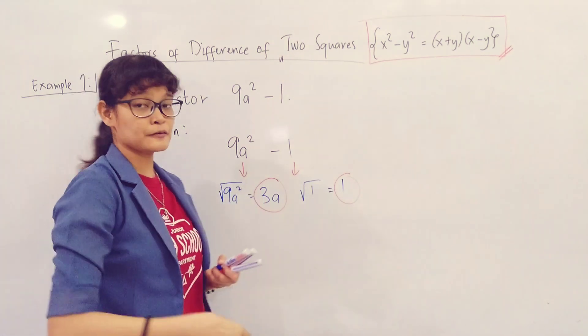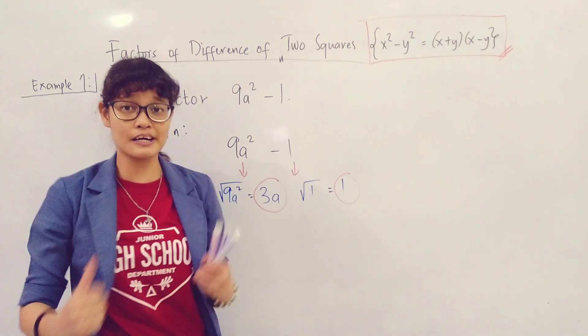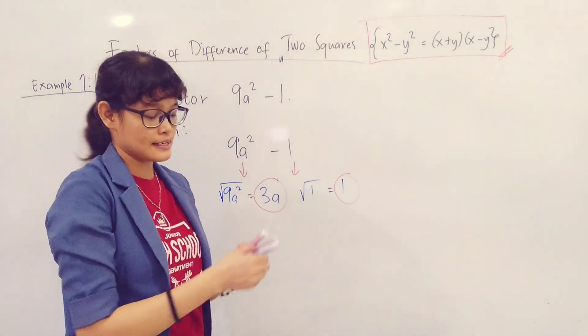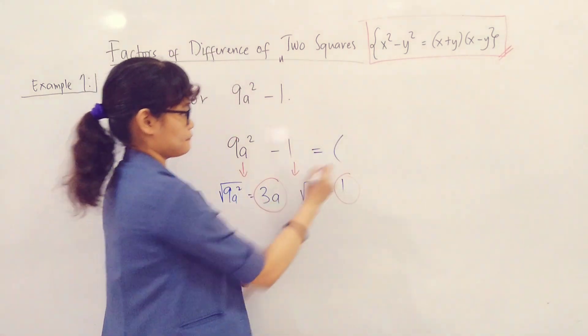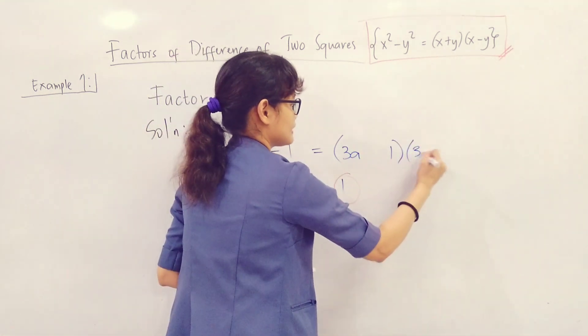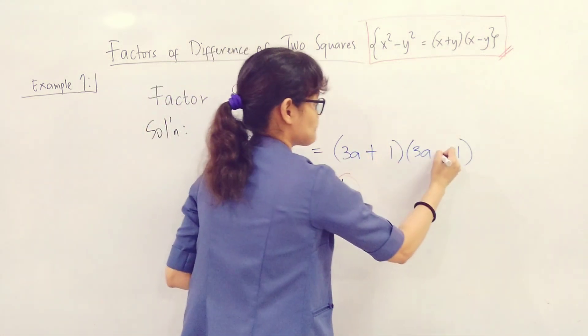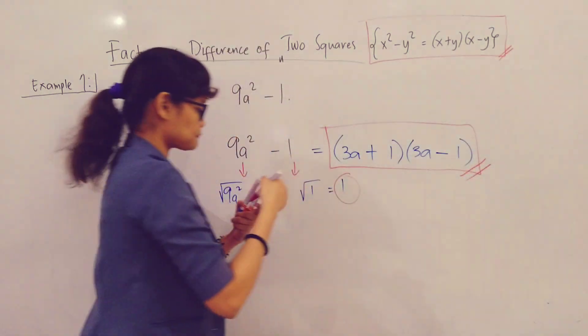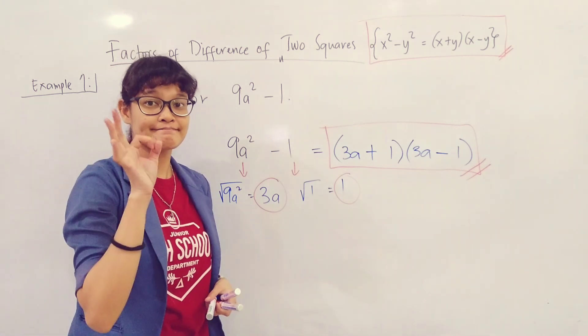Now step 2 is we'll form the pattern form - one sum, one difference. Therefore, 9a squared minus 1 is just equal to the product of 3a plus 1 times 3a minus 1. And that's it. That's how you factor - this is the factor form of 9a squared minus 1.